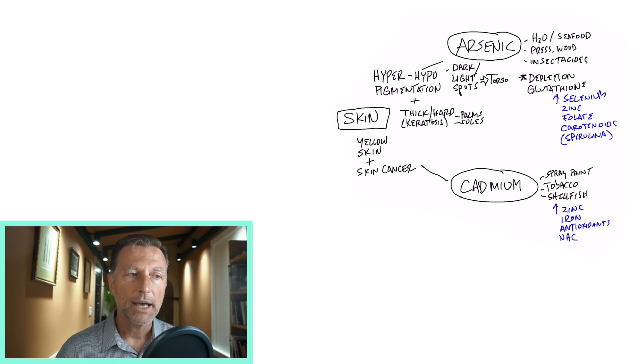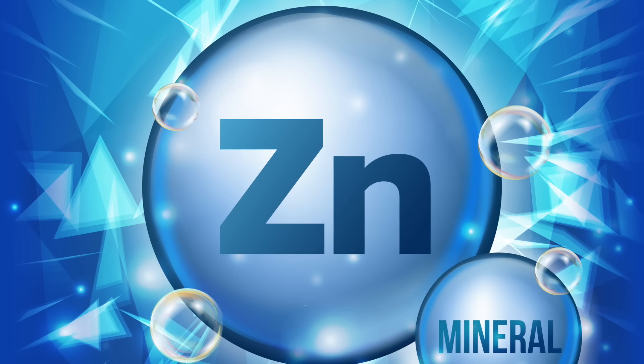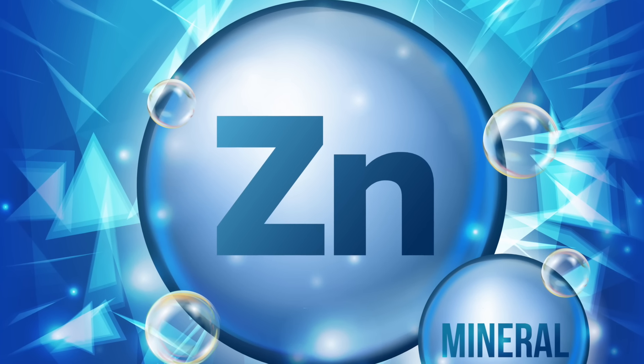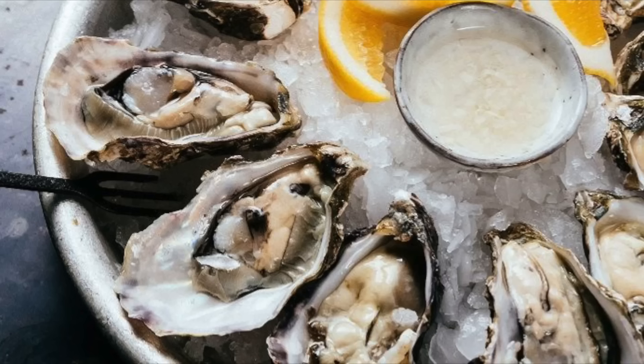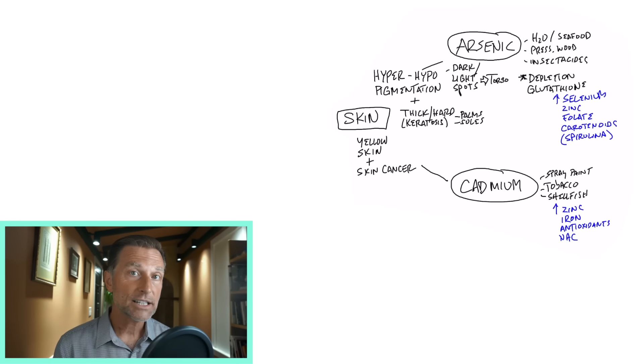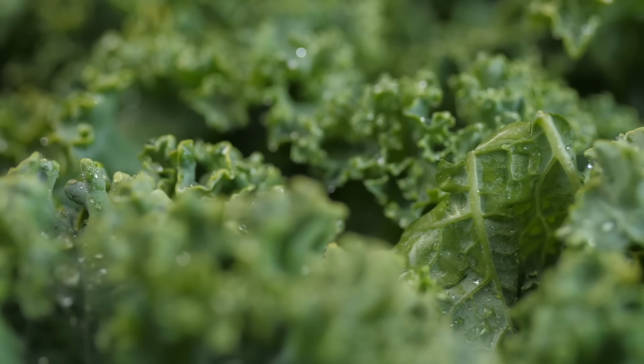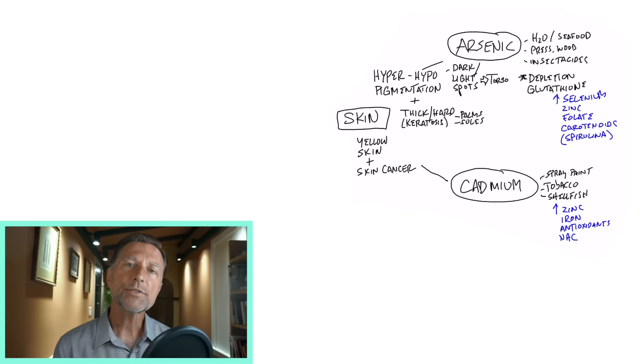There's some protection against cadmium, and that is making sure you have enough zinc in your body. Zinc is going to be a common thread with all four of these heavy metals. The best source of zinc would be red meat, shellfish, beef liver. But any of the antioxidants will help, and that's in a lot of raw vegetables and sprouts and microgreens. Also a remedy called NAC, which is a very powerful antioxidant and a precursor to glutathione.